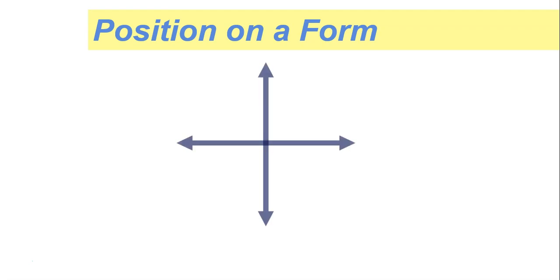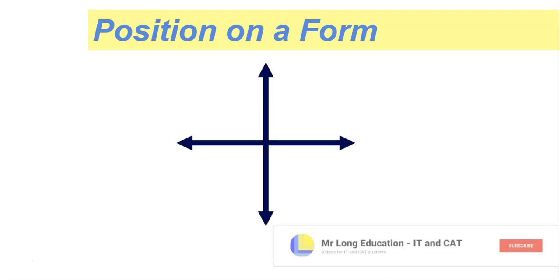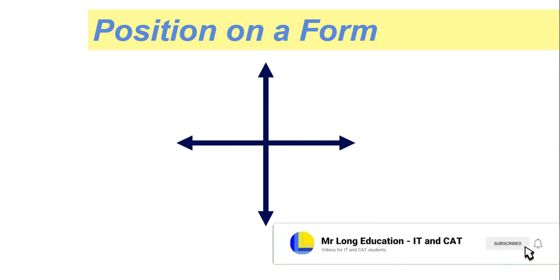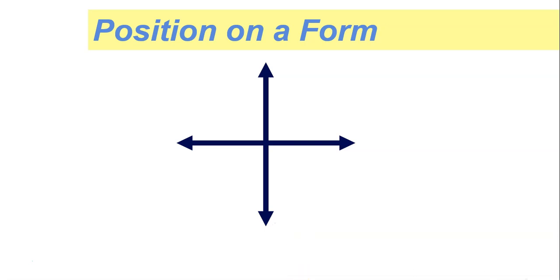Let's recap what we learned about the position on the form. Let's go back to our old mathematical days — you might remember the Cartesian plane. There was an x and a y value, and that point right in the middle was the origin, where the x value was zero and the y value was zero. That was our starting point.